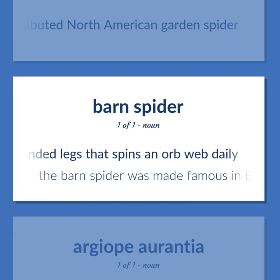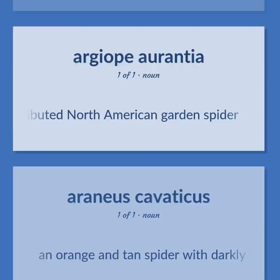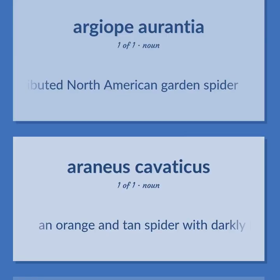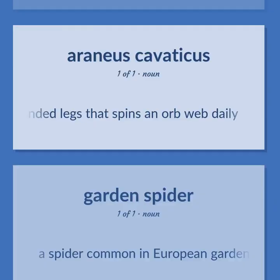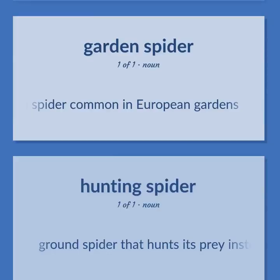The barn spider was made famous in E.B. White's book, Charlotte's Web. A widely distributed North American garden spider — an orange and tan spider with darkly banded legs that spins an orb web daily.